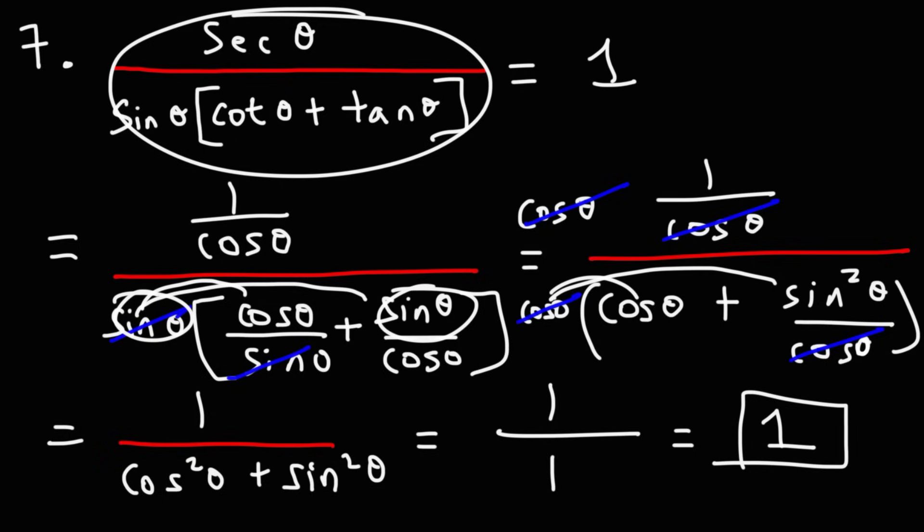That's it for this video. Now you know how to employ the reciprocal identities and the Pythagorean identities to simplify trigonometric expressions.